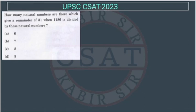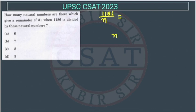The question asks: how many natural numbers give a remainder of 31 when 1186 is divided by these natural numbers? Suppose there is a natural number n. When we divide 1186 by n, we get remainder 31. So we can write it as: n times quotient q plus 31 equals 1186.